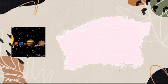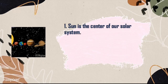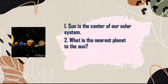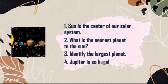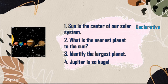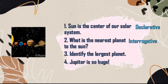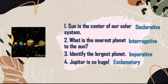How about the second image? These are the sentences I made: Sun is the center of our solar system. What is the nearest planet to the sun? Identify the largest planet. Jupiter is so huge! The first one is a declarative sentence. The second is an interrogative sentence. The third is an imperative sentence. And the last one is an exclamatory sentence.